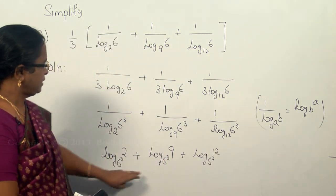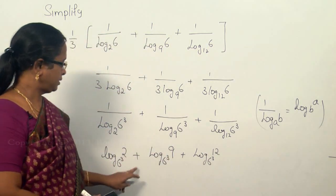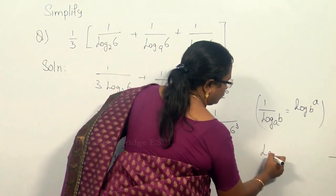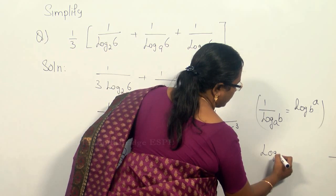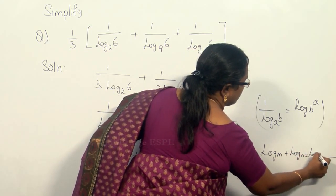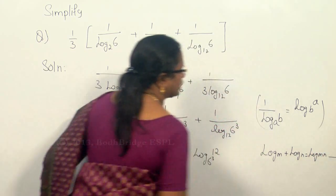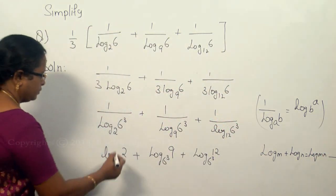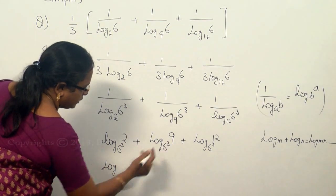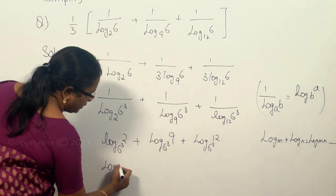Now the bases are same and this is in addition. So this rule of log mn can be applied: log of m plus log of n equals log of mn. We can add directly these three.